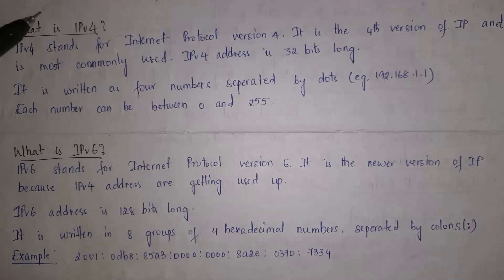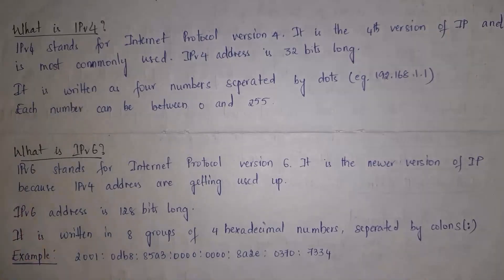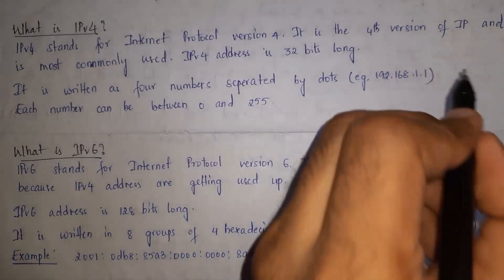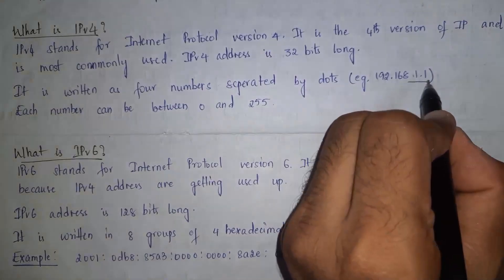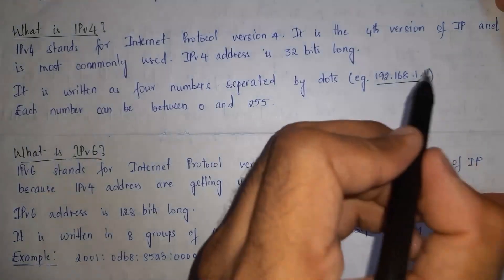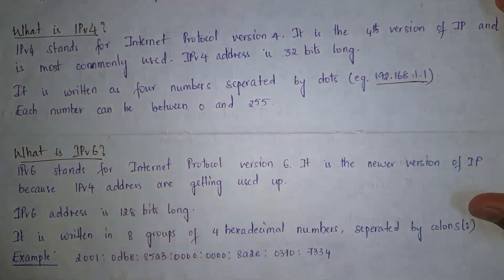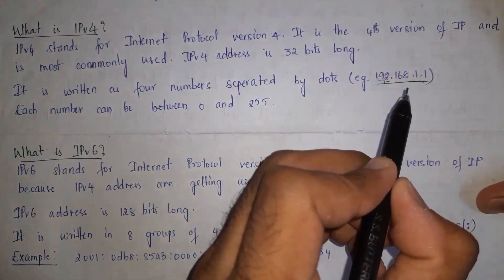Next I will explain what is IPv4. IPv4 stands for Internet Protocol version 4. It is the fourth version of IP and it is the most commonly used. The size of an IPv4 address is 32 bits. Here is an example of an IPv4 address — there are four numbers separated by dots, for example 192.168.1.1. Each number has a range that must be between 0 and 255.